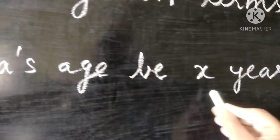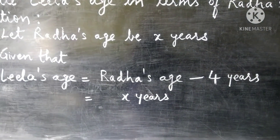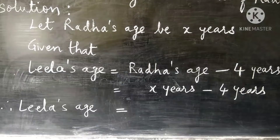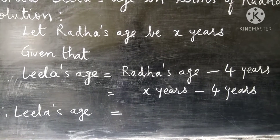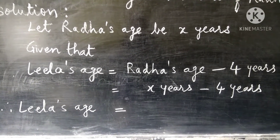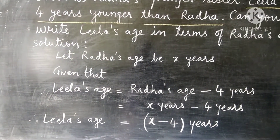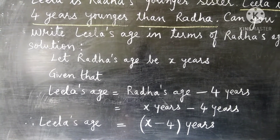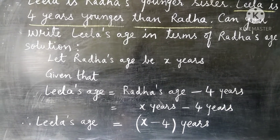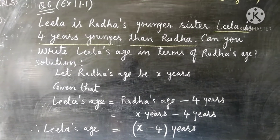See here, Radha's age is x years. So we subtract 4 years from x years. Therefore, Leela's age is equal to x minus 4 years. We have written Leela's age in terms of Radha's age. Radha's age was taken as x, so we have written Leela's age in terms of x. This is the full solution of question number 6.